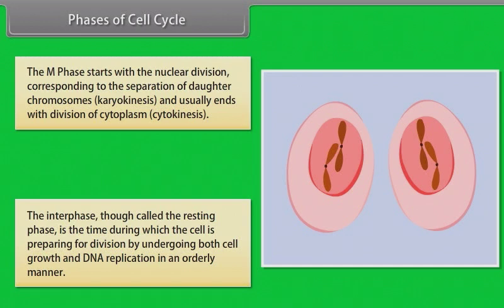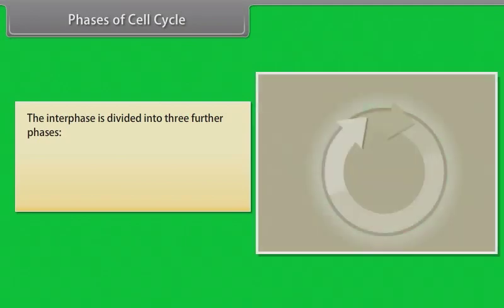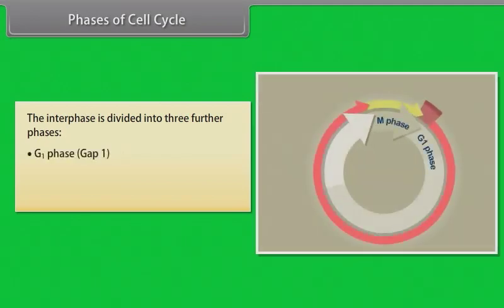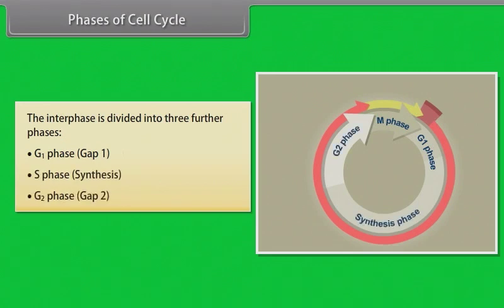The interphase is divided into three further phases: G1 phase or gap 1, S phase or synthesis phase, and G2 phase or gap 2. Now let us know each in detail.